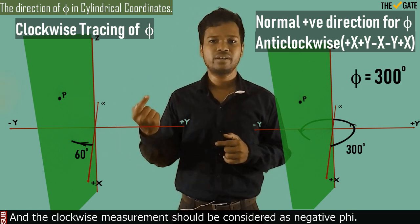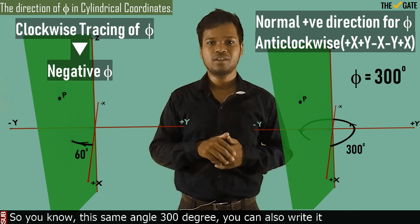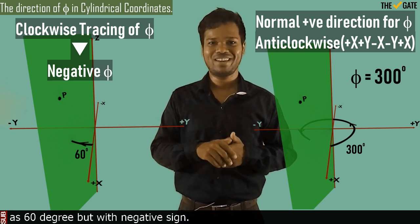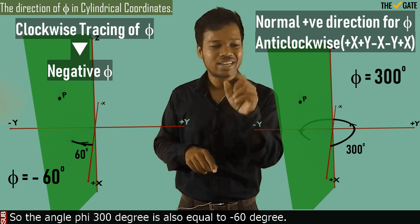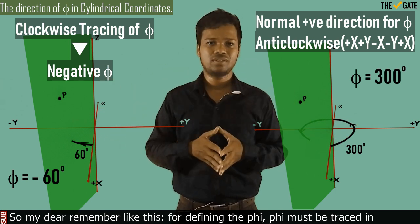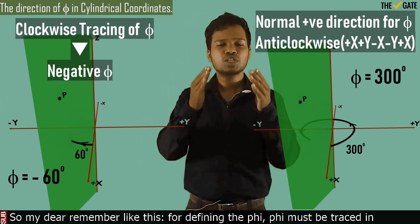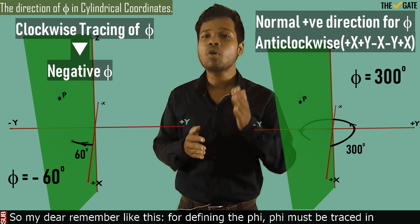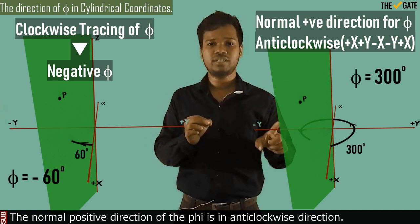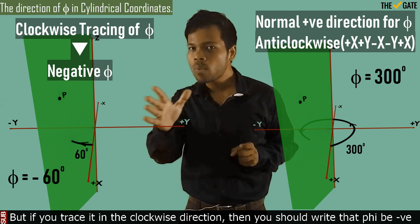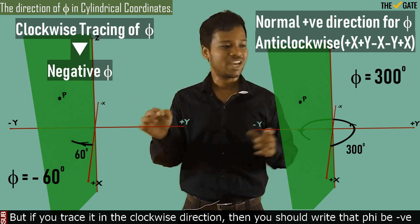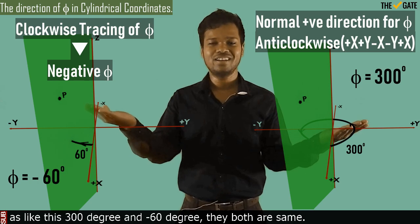And the clockwise measurement should be considered as negative. So this same angle 300 degrees, you can also write it as 60 degrees but with a negative sign. So the angle phi 300 degrees is also equal to minus 60 degrees. Remember: phi must be measured in the anticlockwise direction from the reference — the normal positive direction for phi is anticlockwise. But if you measure it in the clockwise direction, then phi will be negative. Like this: 300 degrees and minus 60 degrees are both the same.